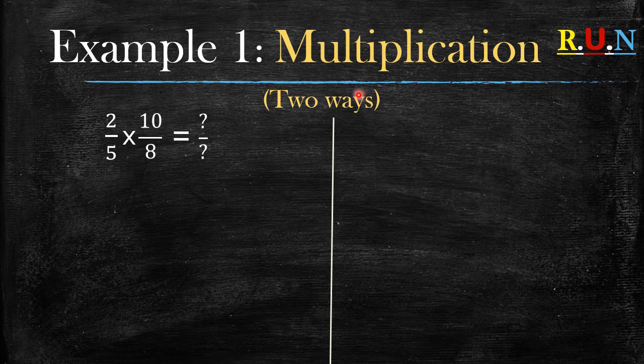Example number one: multiplication. The first way, because there's two ways of multiplying this. The first way is by simplifying the first part's numerator and the second part's denominator. So this eight, if you simplify it with this two, the eight becomes a four and the two becomes a one. Use the highest common factor between these two.